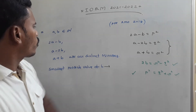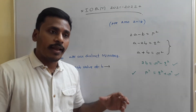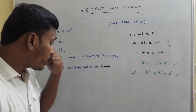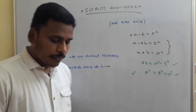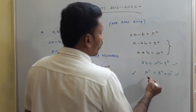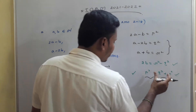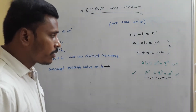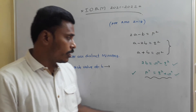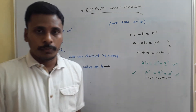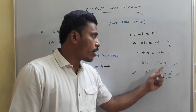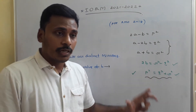So p squared equals q squared plus r squared, and p, q, r are natural numbers. This is just like a Pythagorean triplet — the sum of the squares of two numbers equals the square of the third. The Pythagorean triplet, combined with r squared minus q squared equals 3b, generates our value.